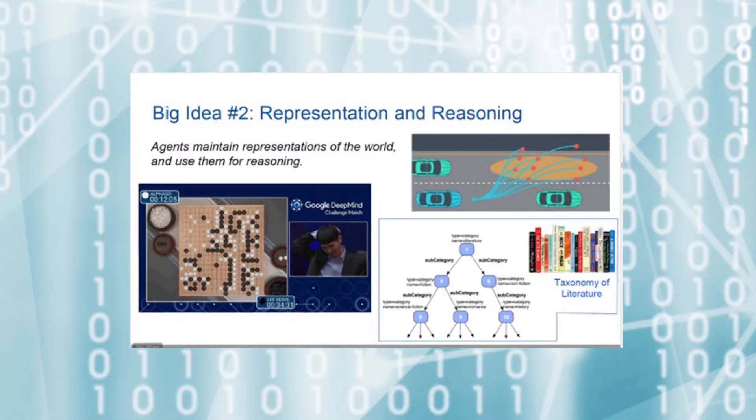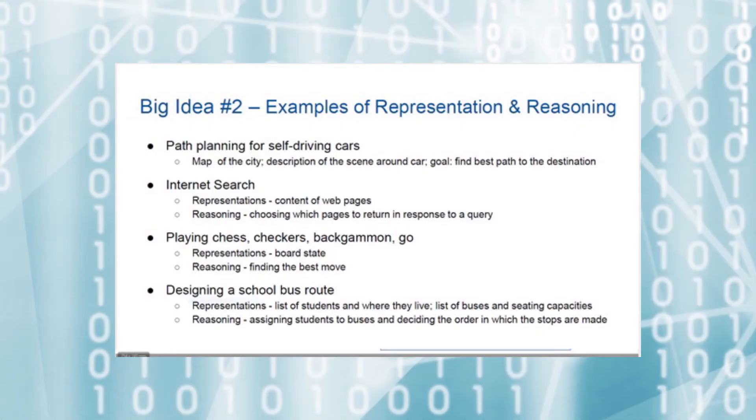The second big idea is representation and reasoning. Intelligent agents maintain representations of the world and use them for reasoning. For example, when a computer plays a game like chess or Go, its representation is the positions of the pieces on the board, and its reasoning algorithm tries to find the best move to make next. Representation and reasoning are complementary. Representations support reasoning algorithms, and reasoning algorithms operate on representations.